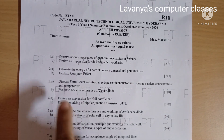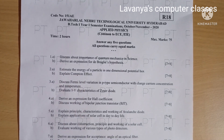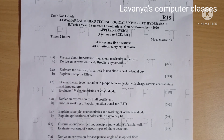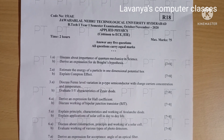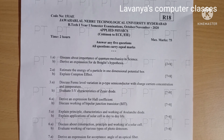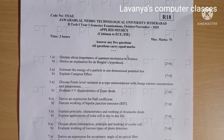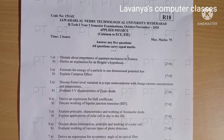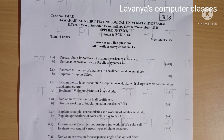Question 1a: Discuss the importance of quantum mechanics in science, for 7 marks. Question 1b: Derive an expression for de Broglie's hypothesis, for 8 marks.